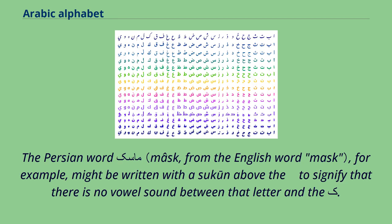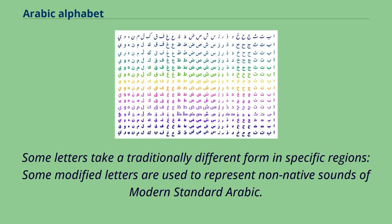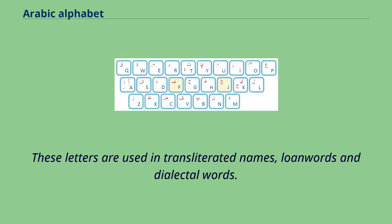The Persian word 'masq', for example, might be written with a sukun above a letter to signify that there is no vowel sound between that letter and the kaf. Some letters take a traditionally different form in specific regions, and some modified letters are used to represent non-native sounds of modern standard Arabic. These letters are used in transliterated names, loanwords, and dialectal words.